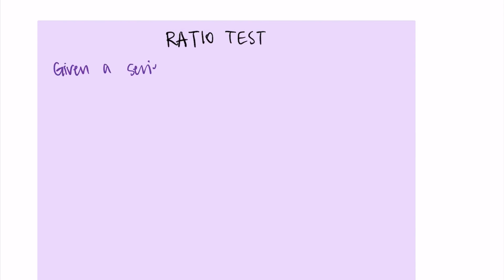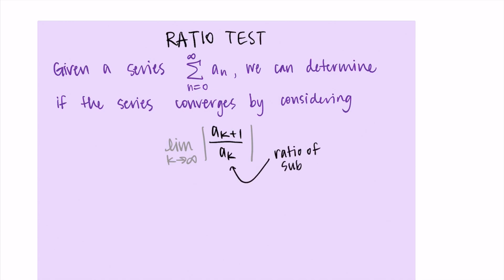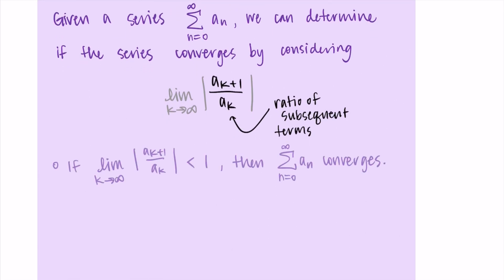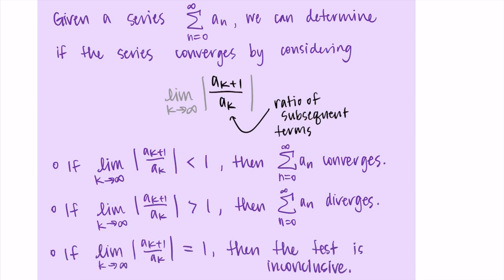Let's talk about what the ratio test says more formally. Given a series — the sum from n equals 0 to infinity of a sub n — we determine convergence by considering the limit as k approaches infinity of the absolute value of (a sub k+1) divided by (a sub k), the ratio of subsequent terms. If that limit is less than 1, the series converges. If the limit is greater than 1, the series diverges. If the limit equals 1, the test is inconclusive and we need another test — which is why those other tests I mentioned at the beginning exist.